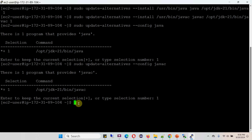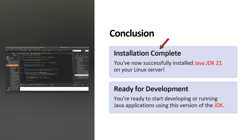In this Linux server, only one JDK is installed, so the list is showing only one. Suppose multiple JDKs are there — this list will show all the JDKs installed on this particular Linux server. The conclusion is: you have now successfully installed Java JDK 21 on your Linux server. Now you are ready to start developing or running Java applications using this version of the JDK.